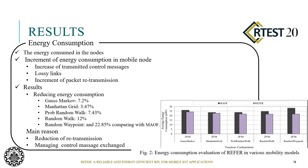There is a trade-off between PDR and energy consumption in IoT infrastructure. Prefair reduces energy consumption across five mobility models: 7.2% in Gauss-Markov, 3.47% in Manhattan Grid, 7.43% in Pseudo Random Walk, 20% in Random Walk, and 22.85% in Random Waypoint compared with the baseline. The main reason is reduction of retransmissions and better management of control packet exchange.